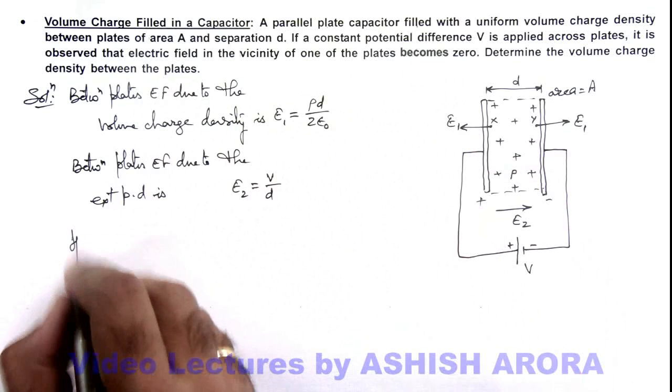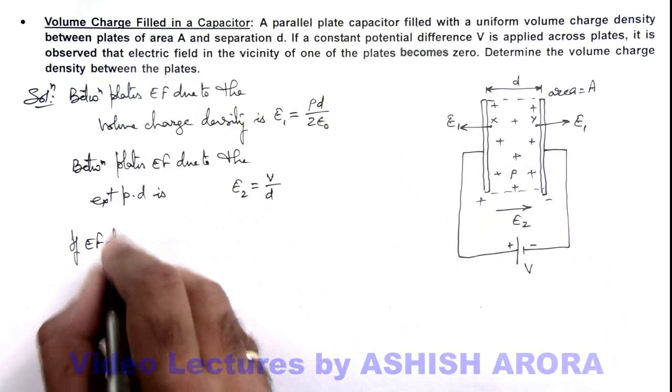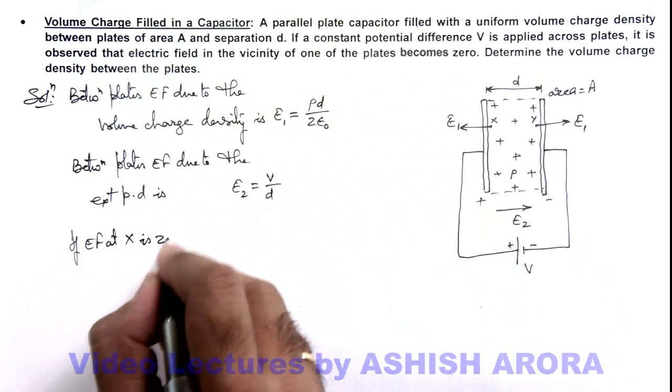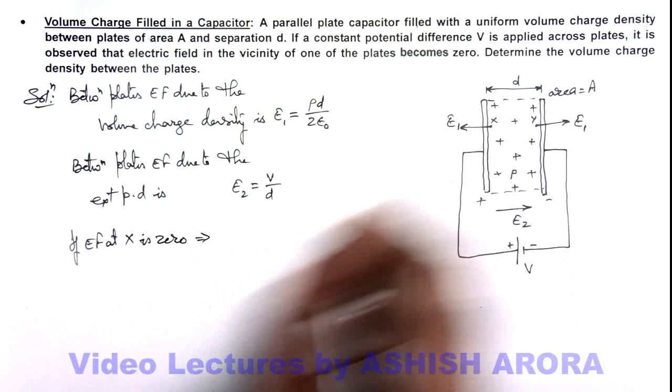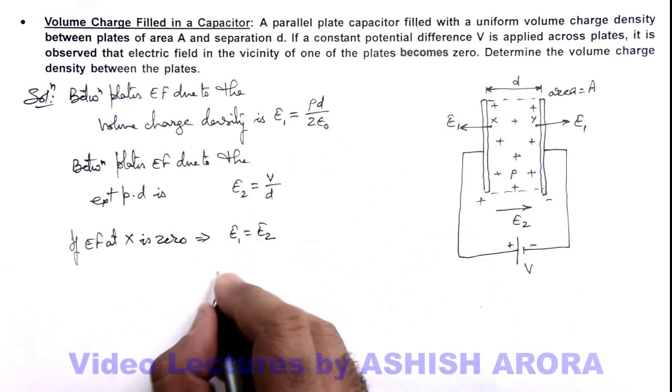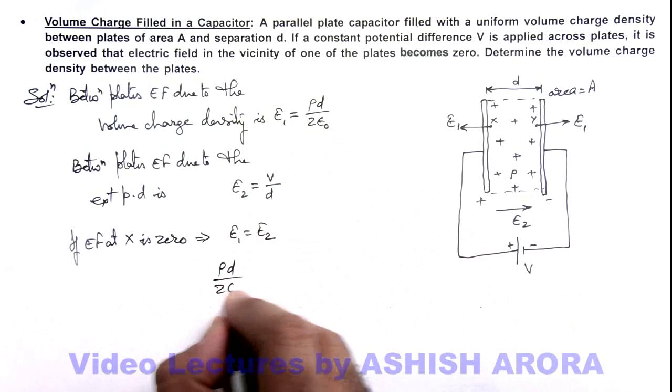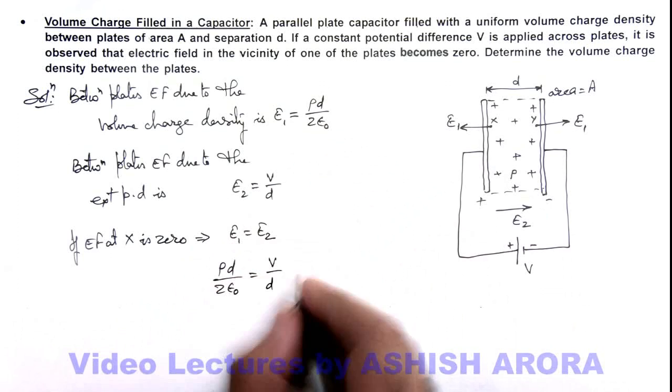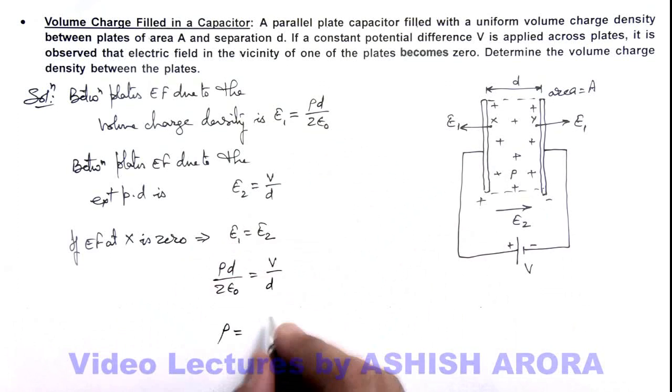If the electric field at X is zero, this implies that at X, the value of E₁ must be equal to E₂. If we substitute, it is ρd/(2ε₀) = V/d. On simplifying, we'll get the value of ρ, the volume charge density. This is given by ρ = 2ε₀V/d², and that's the answer to this problem.